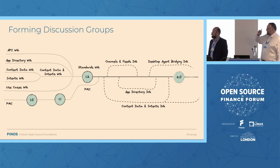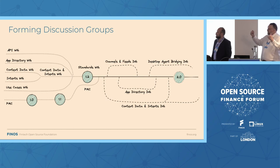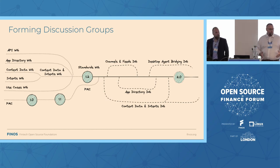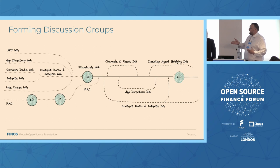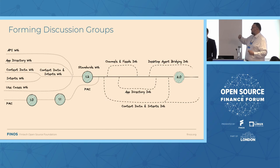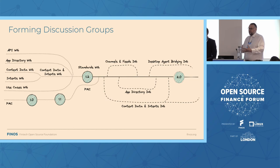I've tried to illustrate how we brought all of these different groups together into one standards working group. If nothing else, it's a great window on how developing a standard works and how dividing and conquering doesn't help in terms of actually getting somewhere. Since version 1.2, we've really focused in on the specific things we've been hearing from people. We had a channels and feeds discussion group — that's in 2.0. For the app directory improvements, the context data and intents we needed to add — all of these things enabled us to get to version 2.0. And with that, over to Chris, who will share more on that.